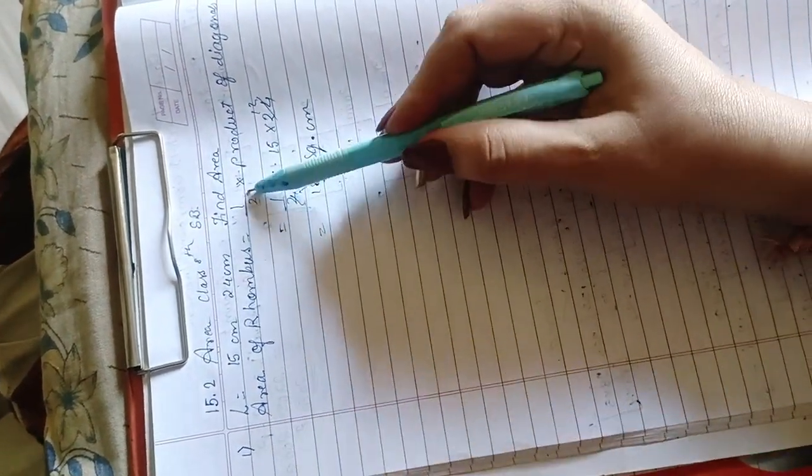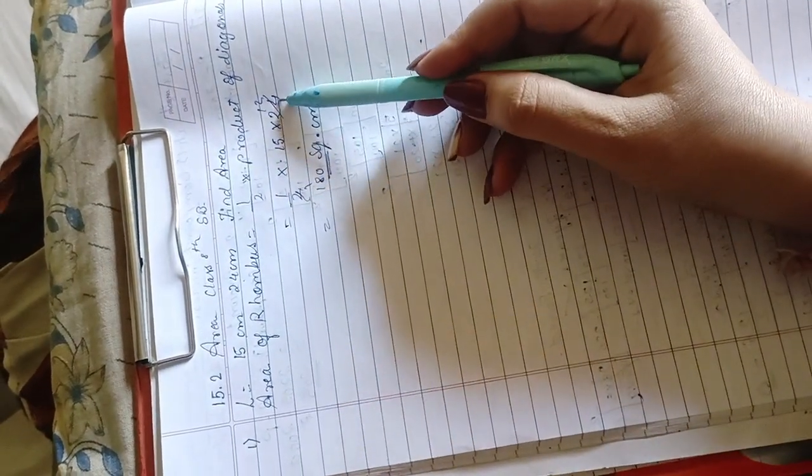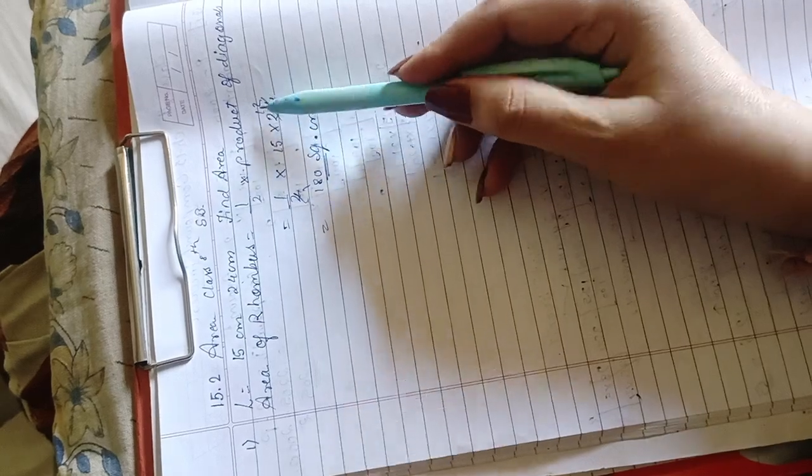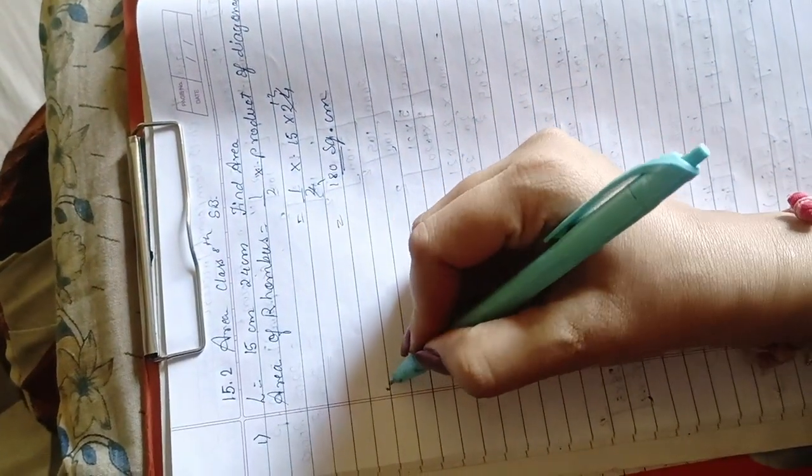Formula for area of rhombus is half into product of length of the diagonals. Half into 15 into 24. 2 12s are 24. 15 into 12 is 180 square centimeter. Last statement we will write,